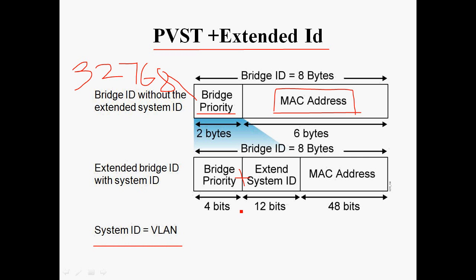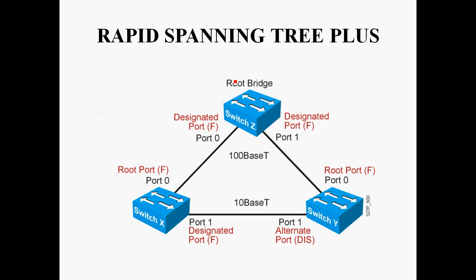Every 2 seconds, the switch sends to the neighboring switch: bridge priority, Extended System ID, and MAC address. Per-VLAN Spanning Tree protocol works similarly to Rapid Spanning Tree Plus. In Rapid Spanning Tree Plus, when configuring a blocking port, it can immediately change into the forwarding port — it does not wait for listening and learning state. That is the main advantage of Rapid Spanning Tree Plus.